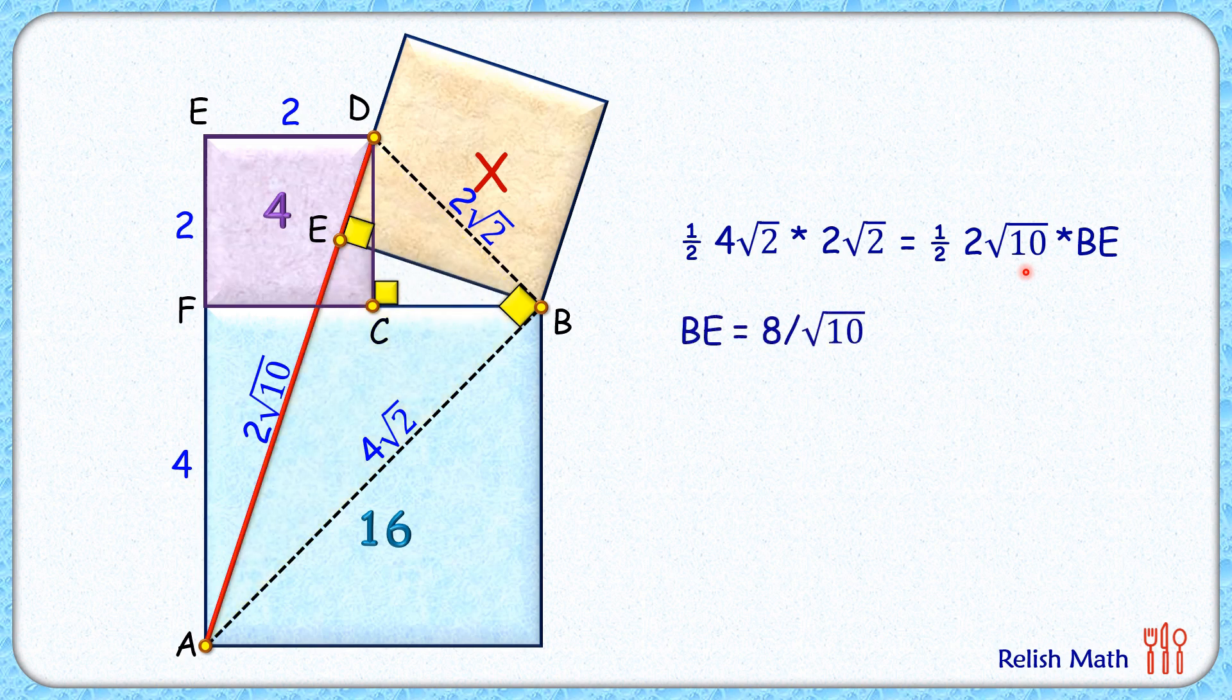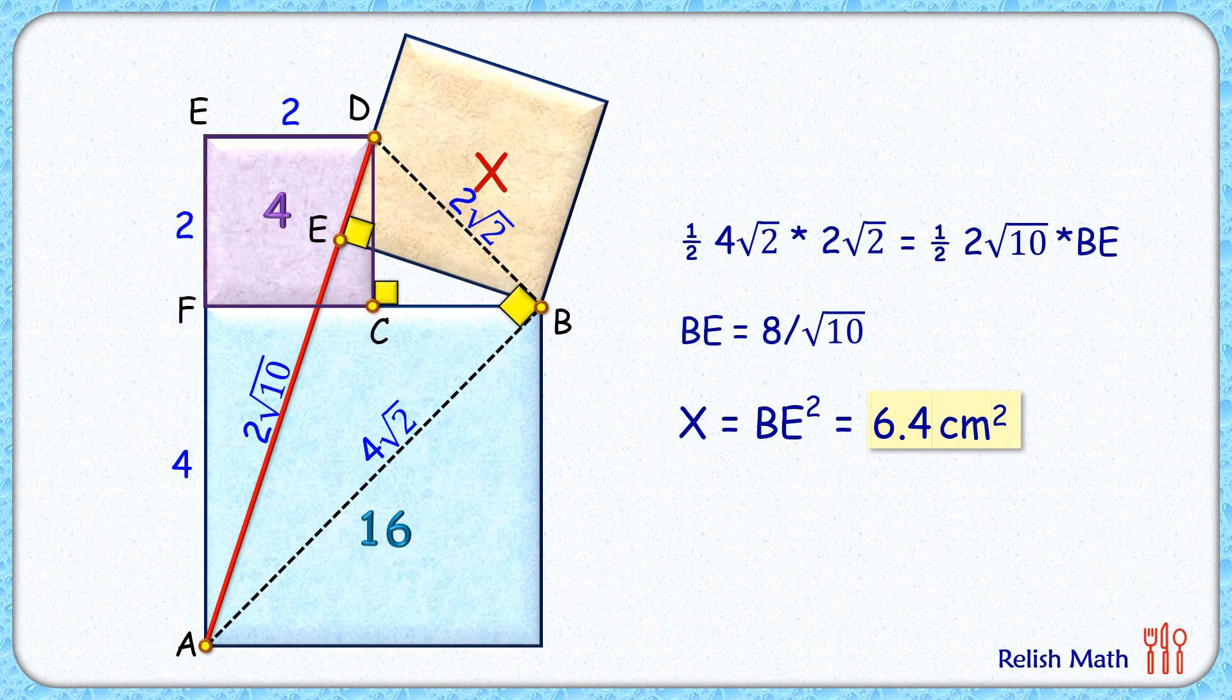So x is the area of the brown square, which is the square of this, that's 64 upon 10, or 6.4 square centimeters. And that's our answer. I hope you enjoyed the solution. I will see you in the next video. Till then, ta ta, bye bye bye.